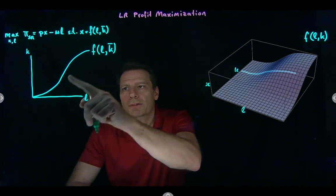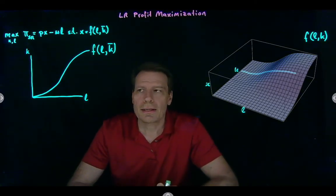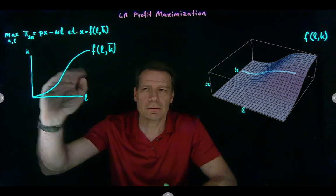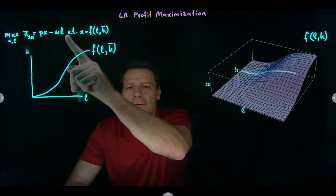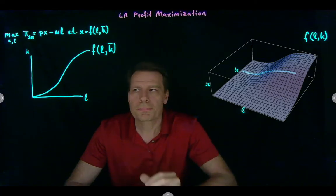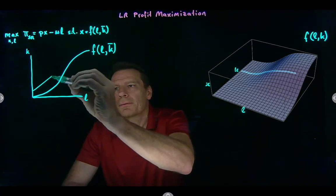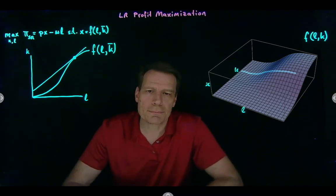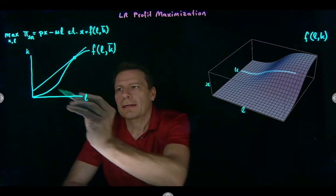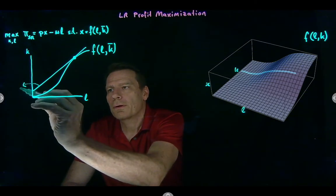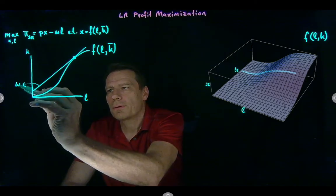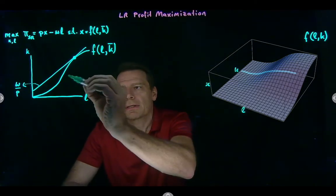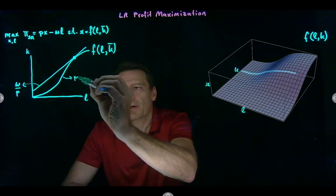The short run production function is the constraint, and the firm moves to its highest possible profit line, where the profit line is given by the profit equation. That line will reach a point of tangency at the profit maximizing production plan. It has a slope of W over P, and the short run production function has a slope of the marginal product of labor.